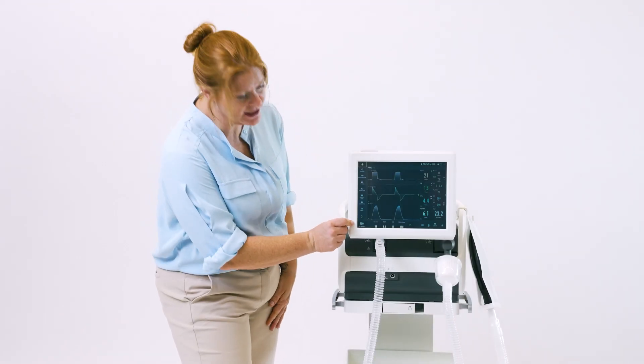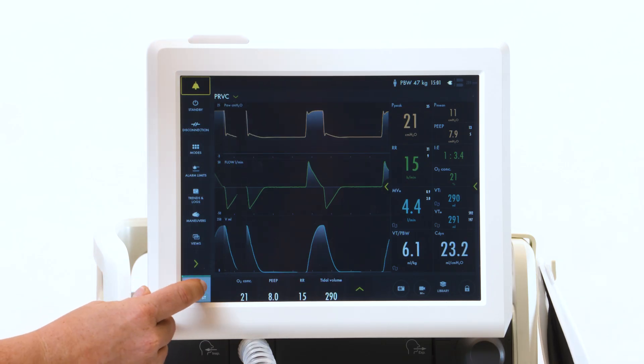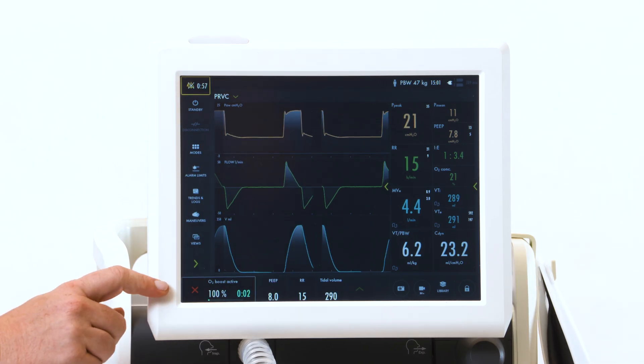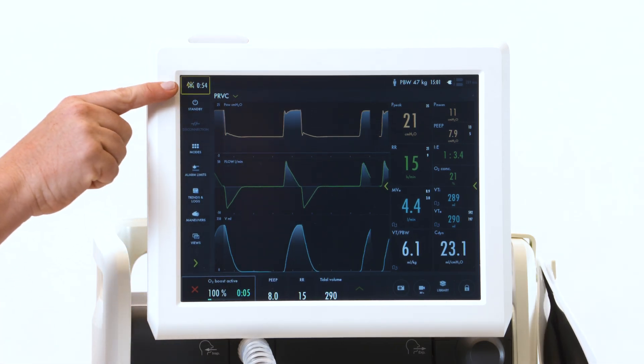The O2 boost is located down here. To activate, touch and hold until the blue bar goes across. It will give you a minute's worth of that O2 and silence your alarms for a minute.